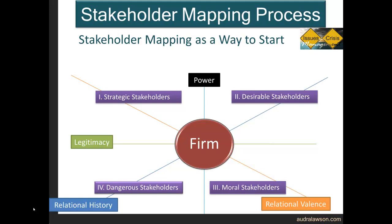Finally, probably the most interesting group: dangerous stakeholders. These groups have power but are most definitely not liked by the organization and not always viewed as legitimate. The organization may also not know about groups that could have direct power over them. This is the category that's key for issues management — identifying groups and issues the organization doesn't know about but that could affect them directly is about minimizing risk and preventing issues from emerging as crises. For Coca-Cola, dangerous stakeholders could include government, human rights advocacy groups, labor groups, or environmental groups. They're really important to manage because of the power component.